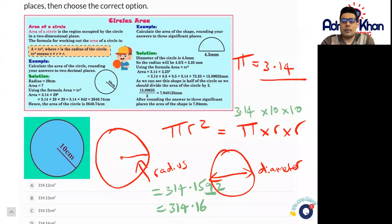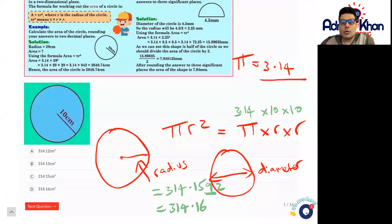It's more than halfway, so the five will become a six. So our answer in that case will be 314.16 centimeters squared. And remember, when we're working out area whether it's a square, rectangle, triangle, or even a circle, we always put the square sign right at the end of our measurement.